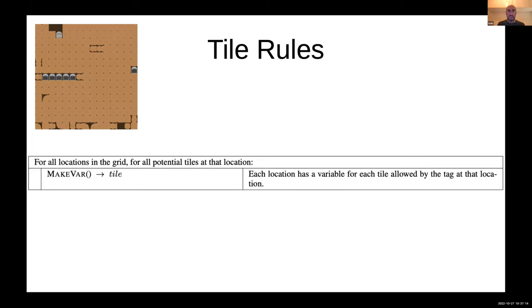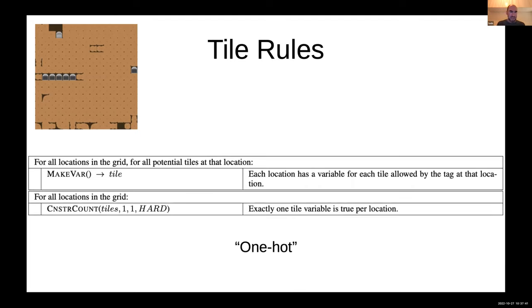The simplest rule is the tile rules. You have certain locations in the grid, and for each location in the grid, you have exactly one tile that you place there. The way it does this is essentially for every tile, for every location, for every possible tile that you might want to place at that location, you create a Boolean variable for that tile being at that location. Then for every individual location on the grid, you add a constraint count that exactly one of those variables is true as a hard constraint.